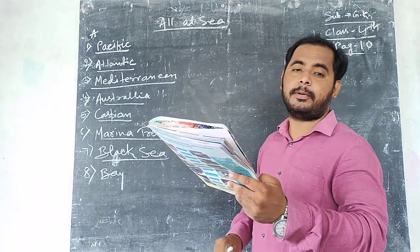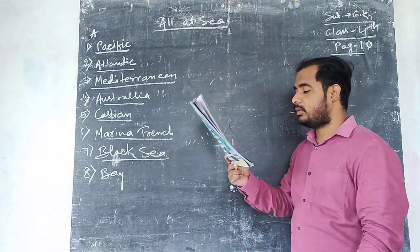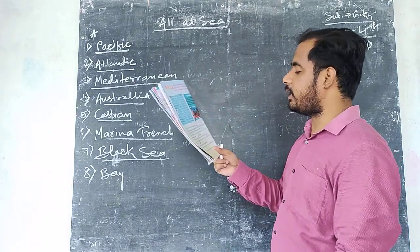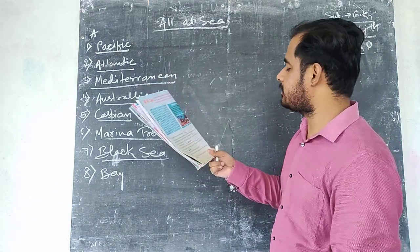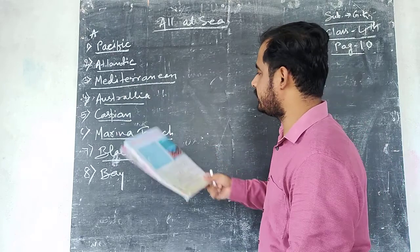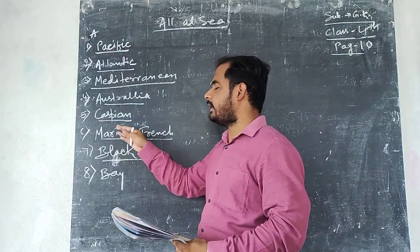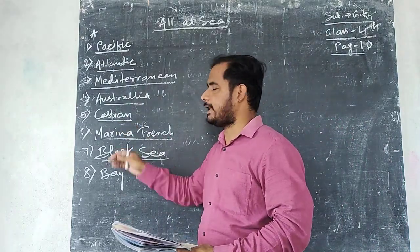Question number 5: This is the largest inland water body on the earth. This sea is bordered by 5 countries. The answer to question number 5 is Caspian.